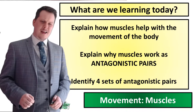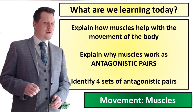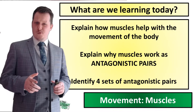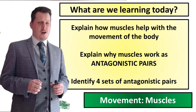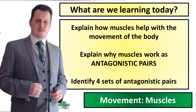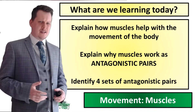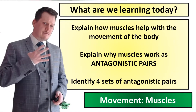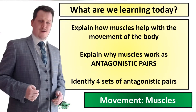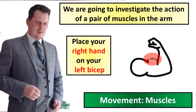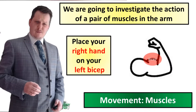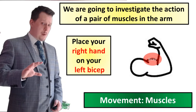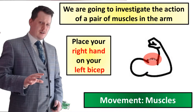In today's lesson we're going to explain how muscles help with the movement of the body. We're going to talk about something called antagonistic pairs and identify four sets of those pairs. We're also going to investigate the action of a pair of muscles in the arm.